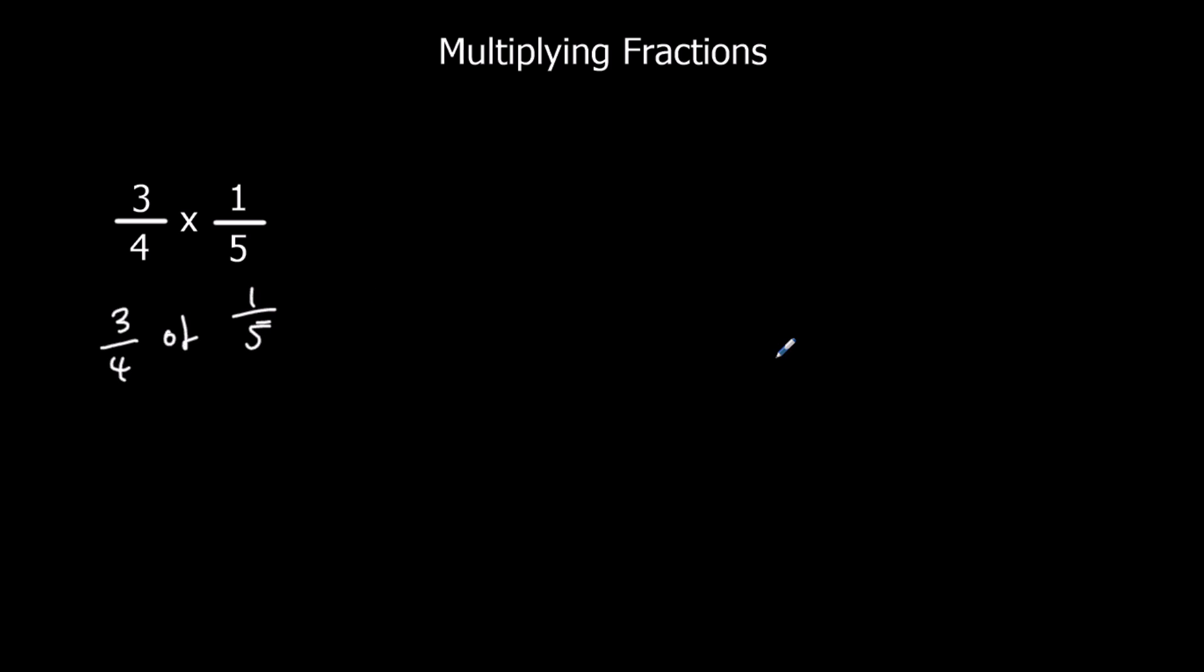So I can show it on a diagram with a bit of difficulty. So I've got a fifth, so each one's a fifth, and I want three quarters of a fifth. So I need to cut each of these fifths into four bits.